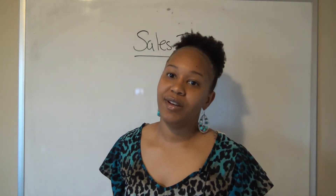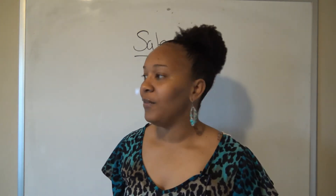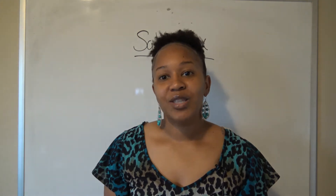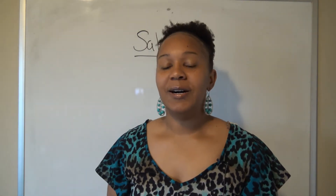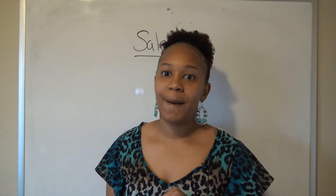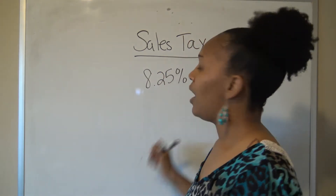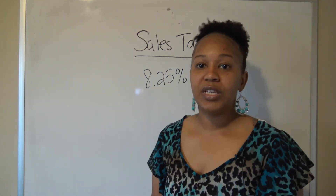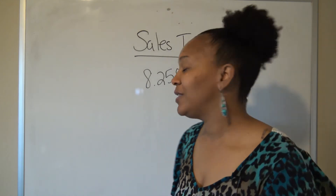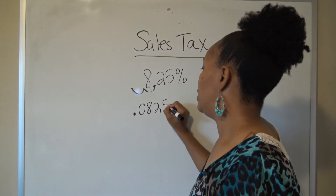Whenever you calculate sales tax problems you always have to convert that percentage to a decimal. For example, if I wanted to buy shoes that cost $39.99 in Texas, I'd have to pay taxes on them unless I'm a nonprofit or tax-exempt organization. To convert to a decimal, you move the decimal point to the left two times, so 8.25% becomes 0.0825 as a decimal.